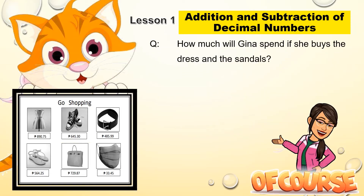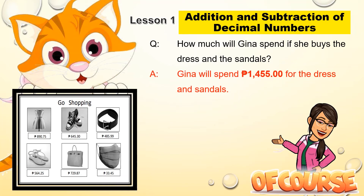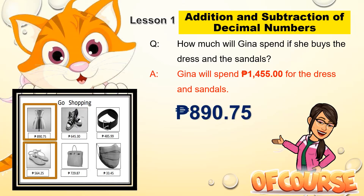Let me show you how I got the answer. As I said, Gina will spend 1,455 pesos for the dress and sandals. Look at the items — we have the dress and the sandals. The dress costs 890 pesos and 75 centavos, while the sandals cost 564 pesos and 25 centavos.